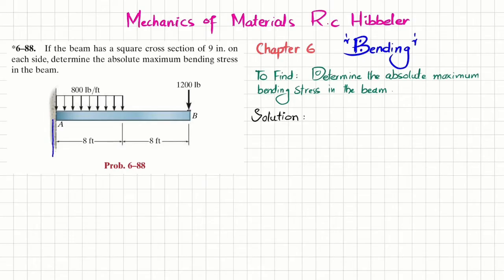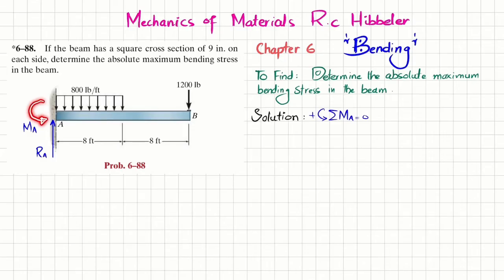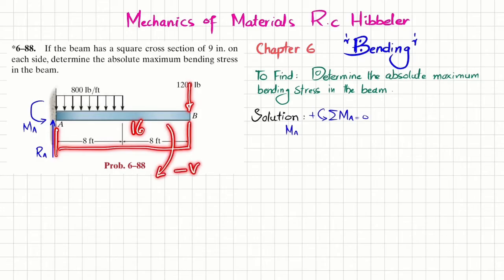First step: remove the fixed support at point A. You will have a reaction force Ra and a moment Ma. We find Ra and Ma using equations of equilibrium. The first equation is the sum of all moments about point A equals zero, taking counterclockwise as positive. Ma is counterclockwise so it is positive. The moment due to the 1200 pound load at a perpendicular distance of 16 feet is clockwise, so it is negative: minus 1200 times 16.